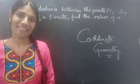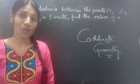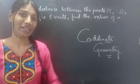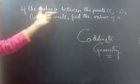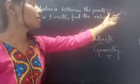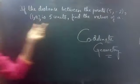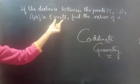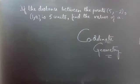Hello everyone, this is Jay Kalina here. In this video we are going to solve a problem from coordinate geometry. So let's get started. Problem: if the distance between the points (5, -2) and (1, a) is 5 units, find the values of a.